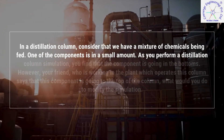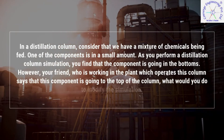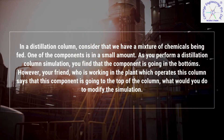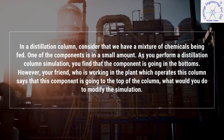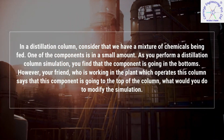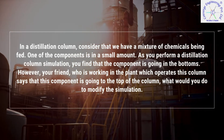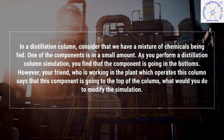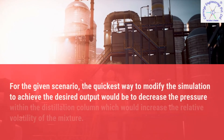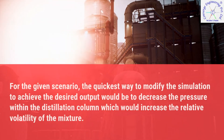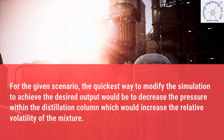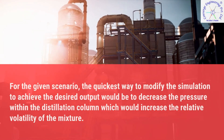In a distillation column, consider that we have a mixture of chemicals being fed. One of the components is in a small amount. As you perform a distillation column simulation, you find that the component is going in the bottoms. However, your friend working in the plant says this component is going to the top of the column. What would you do to modify the simulation? The quickest way would be to decrease the pressure within the distillation column, which would increase the relative volatility of the mixture.